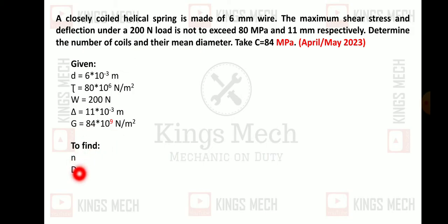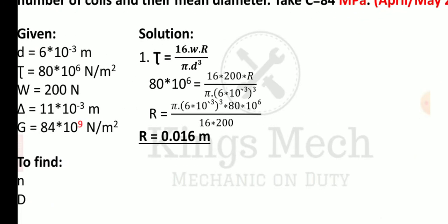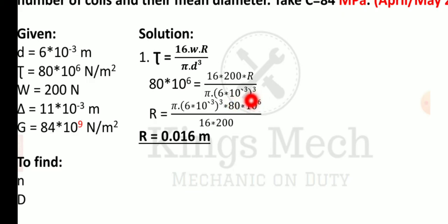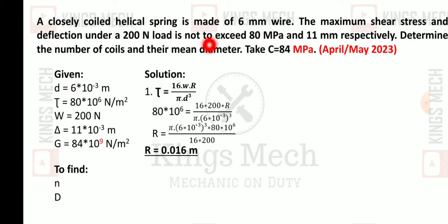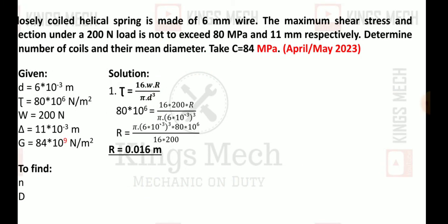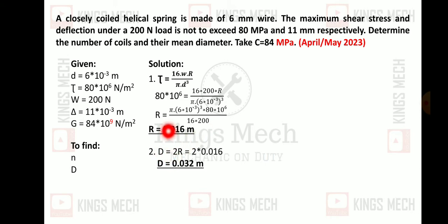We need to find the number of coils n and mean diameter D. Using the shear stress formula: τ = 16WR / (πd³), where R = D/2 is the mean coil radius. Substituting τ = 80×10⁶, W = 200, and d = 6×10⁻³, we get R = 0.016 m. Therefore mean diameter D = 2R = 0.032 m.